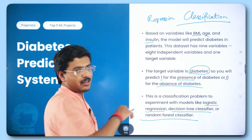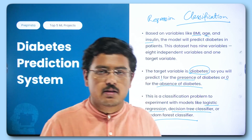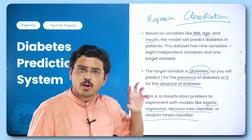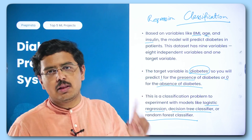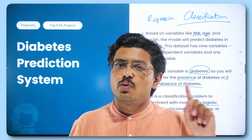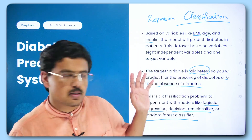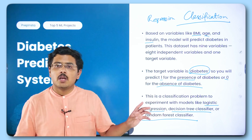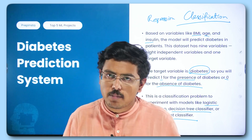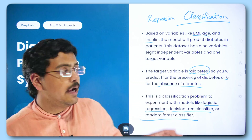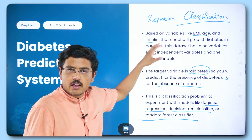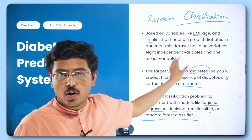All three classifiers — logistic regression, decision tree, and random forest — are often asked in interviews. If you have implemented any one of them, you will get the core crux of classification, which will help you out a lot in interviews when you sit for any ML profile. Alongside that, this will also give you a good understanding of supervised learning and feature engineering using these independent variables.